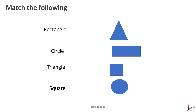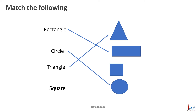Match the shapes with their appropriate names. First one is a rectangle with one long and one short side. A circle is round in shape. A triangle has three sides. A square has all four sides that are equal. Fantastic!